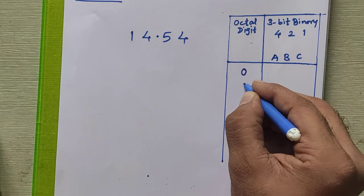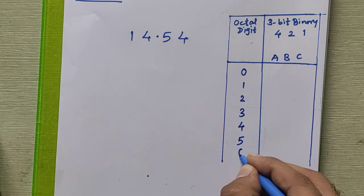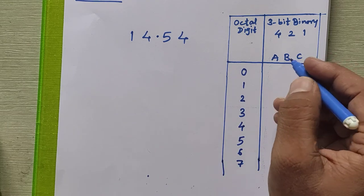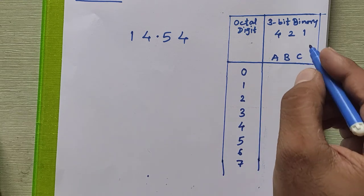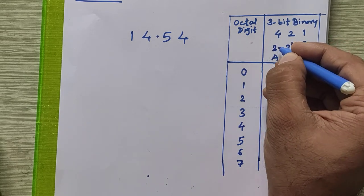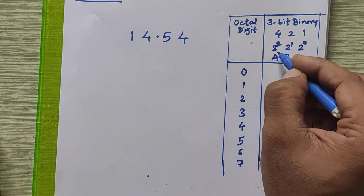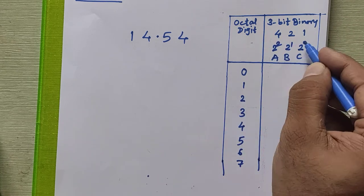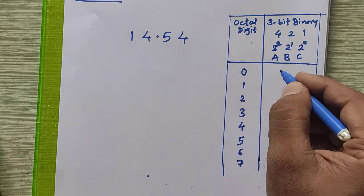I'll write all the valid digits of the octal number system here: 0, 1, 2, 3, 4, 5, 6, and 7. Then we are going to write the three-bit binary equivalent. The three bit positions represent 2² (4), 2¹ (2), and 2⁰ (1), so it is a 4-2-1 system. The octal digit number system uses this 4-2-1 weighting.